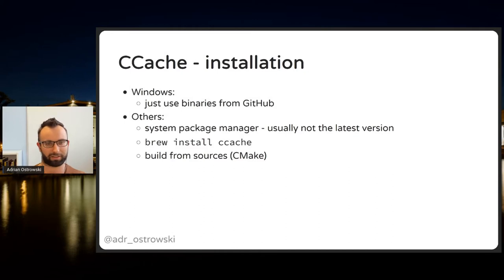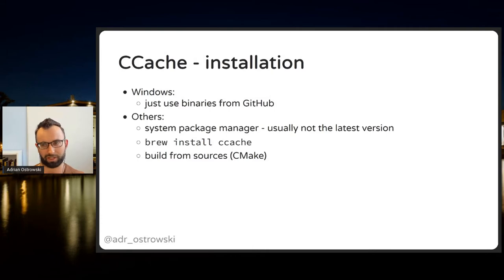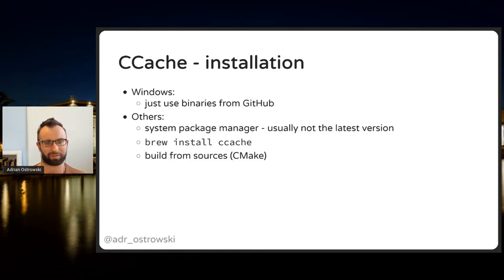Usually the system package manager won't give you the latest Ccache, so you might miss checksum support or other features. I recommend using Homebrew or another non-OS package manager. With Homebrew, just type brew install ccache. If you want the leading-edge version, you can also build from sources — it's a regular CMake project, so it shouldn't be too hard.